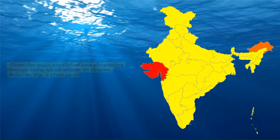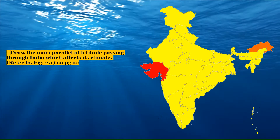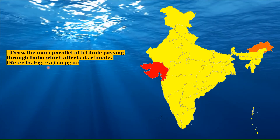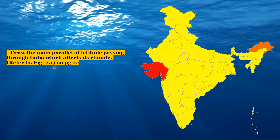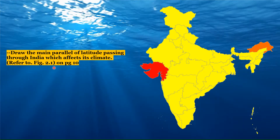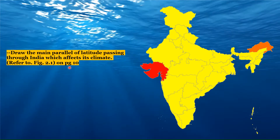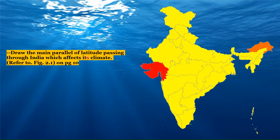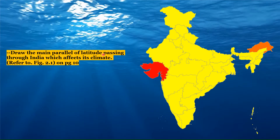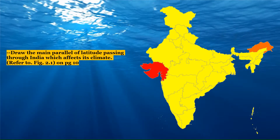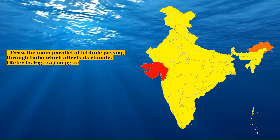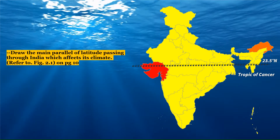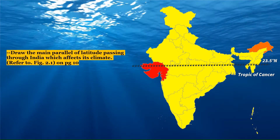The next question: draw the main parallel of latitude passing through India which affects its climate. Refer to figure 2.1 on page number 10 — that refers to chapter two on location and extent. The latitude which passes through India is the Tropic of Cancer, and it affects the climate of India. It divides India into two zones: the tropical and the subtropical zone.